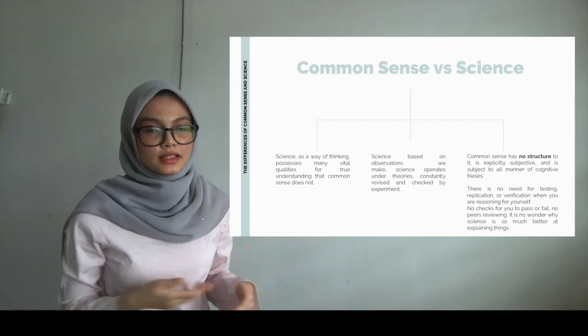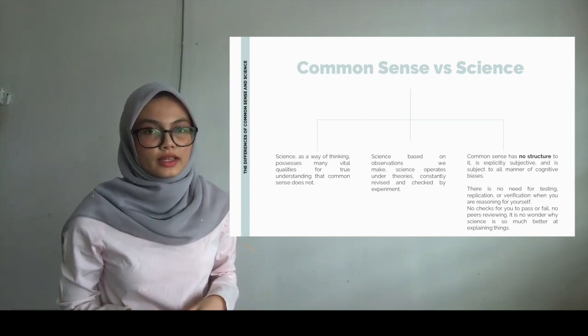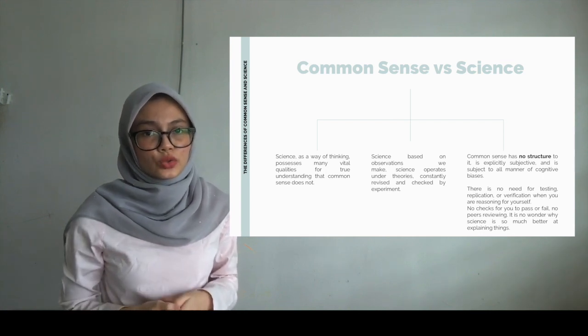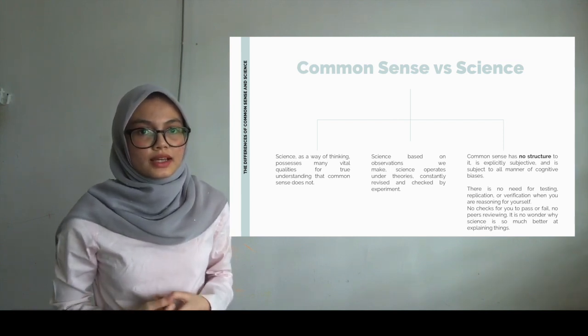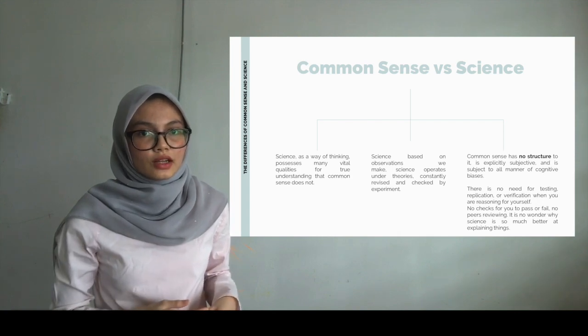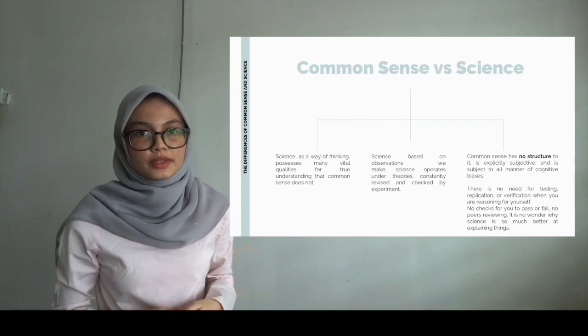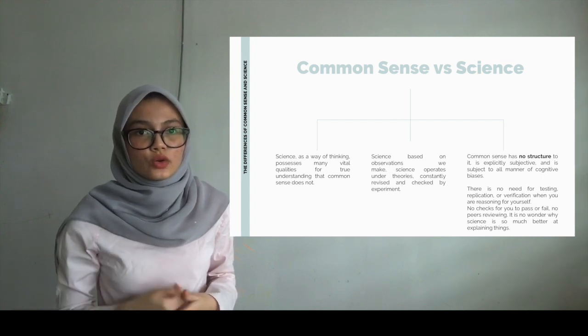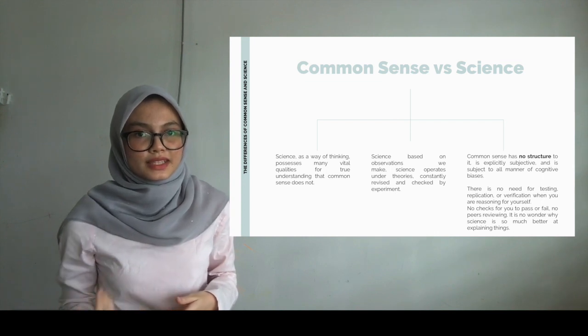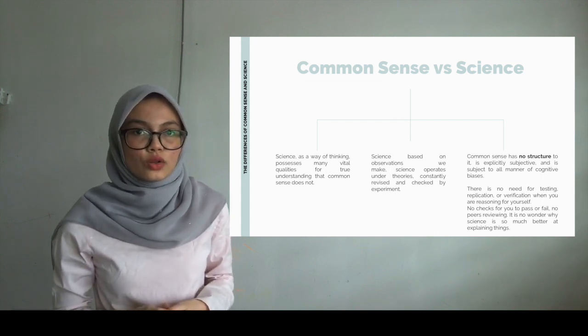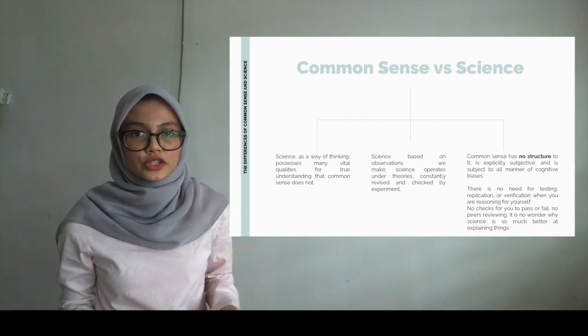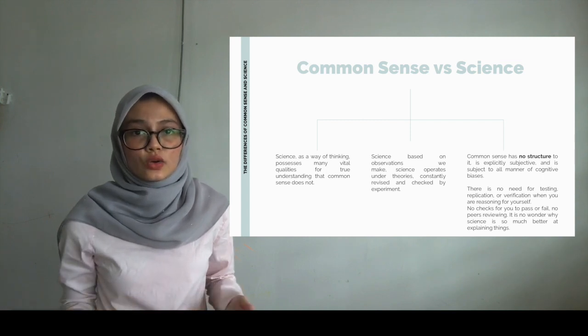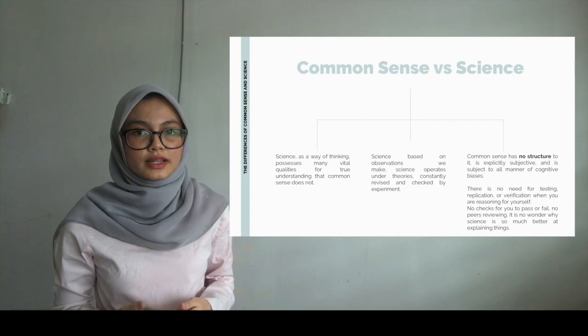The differences of common sense and science. Firstly, science as a way of thinking possesses many vital qualities for true understanding that common sense does not. Second, science is based on observations we make. Science operates under theories, constantly revised and checked by experiment. While common sense has no structure to it, is explicitly subjective, and is subject to all manner of cognitive biases. There is no need for testing, replication, or verification when you are reasoning for yourself. No checks for you to pass or fail, no peer review. It is no wonder why science is so much better at explaining things.